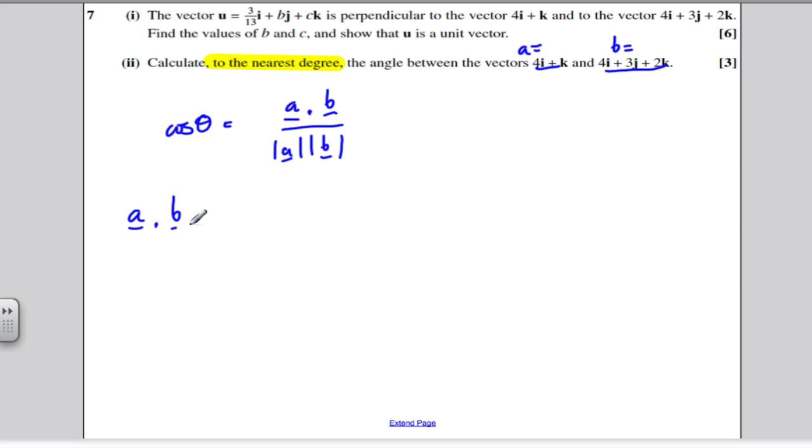So A dot B, 4 times 4 is 16, no j times 3 is nothing, and 1 k times 2 is 2. Add those together, you get 18.